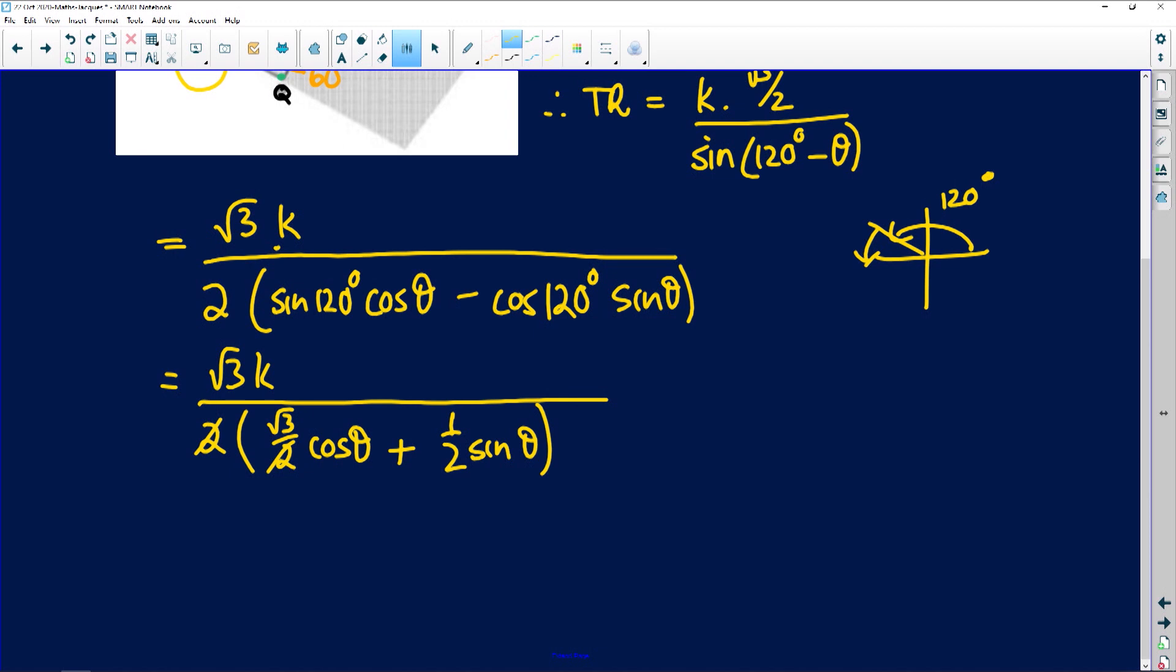And what's left for us is to just do that and I have answered the first question. Root 3 k over root 3 cos theta plus the sine of theta.